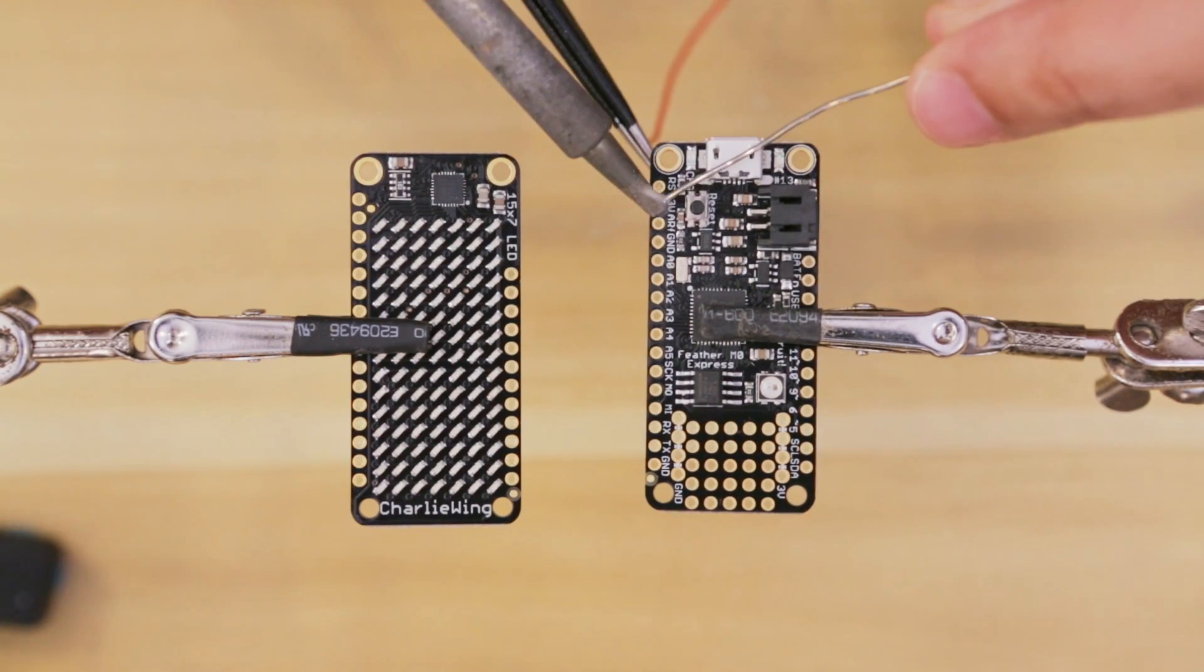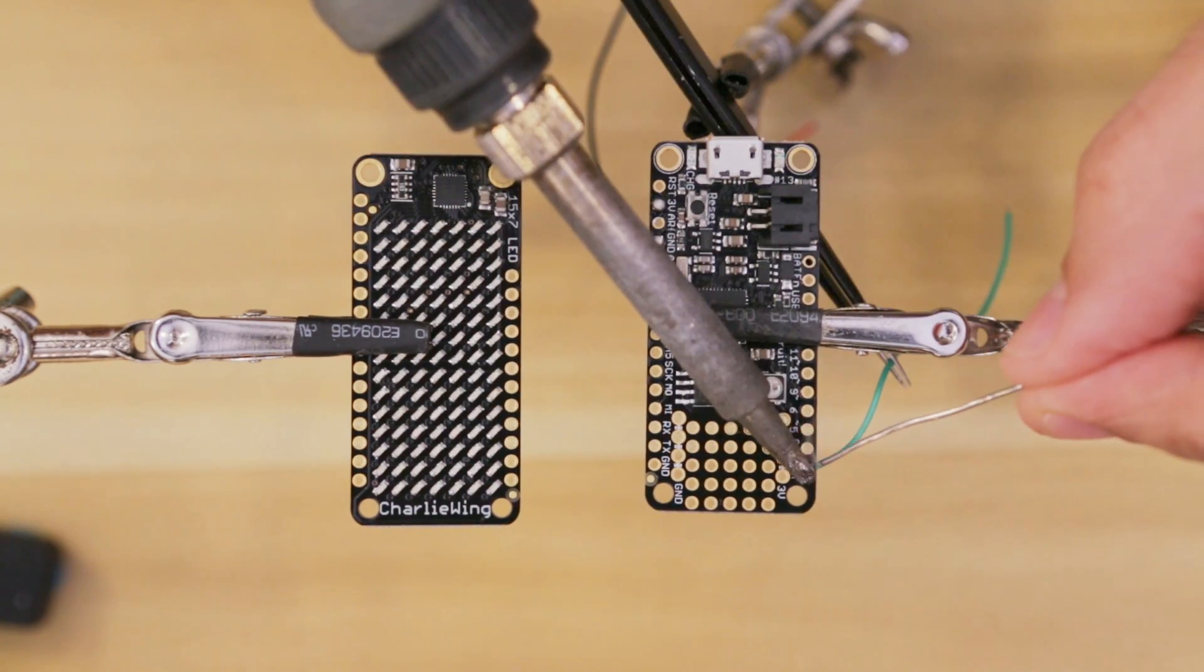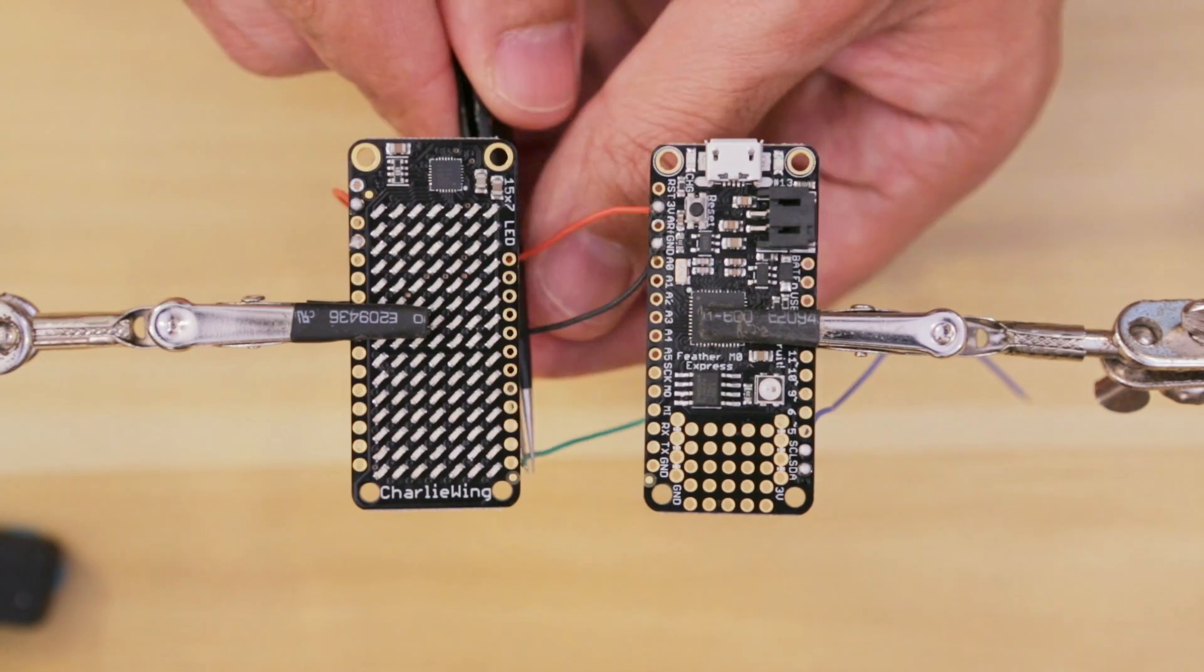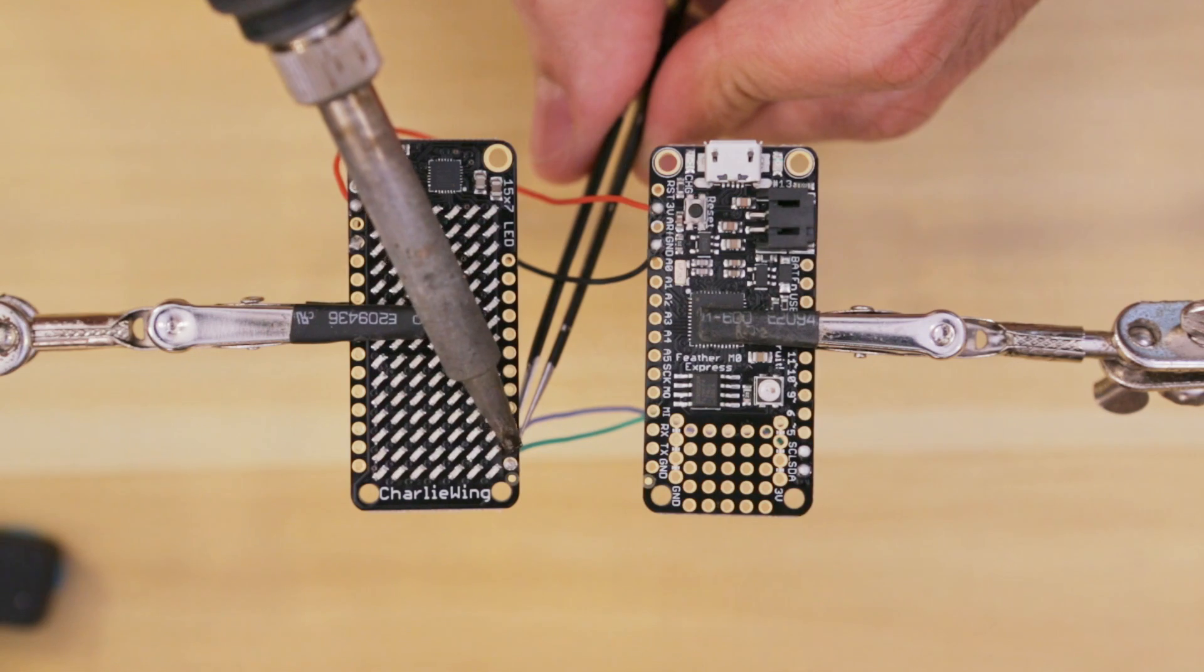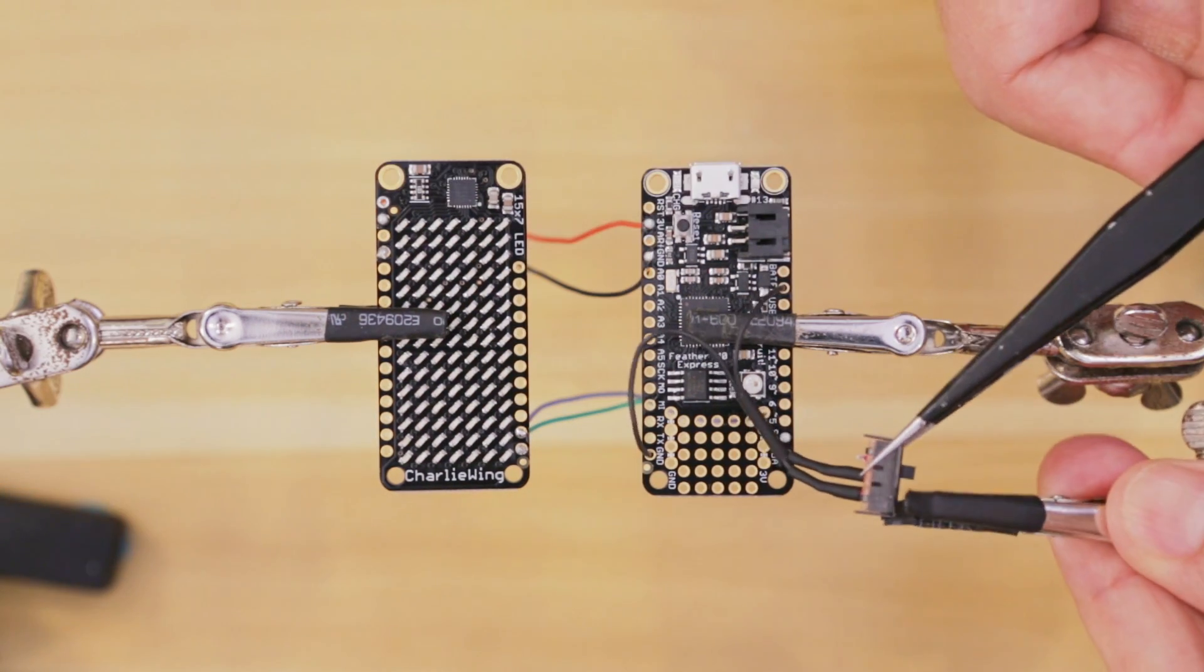To make the assembly as simple as possible, the LED matrix and feather are hand wired. Solder the wires from the bottom side of the board to make it easy to attach. 30 gauge silicone coated wires are really nice because they're both flexible and durable.